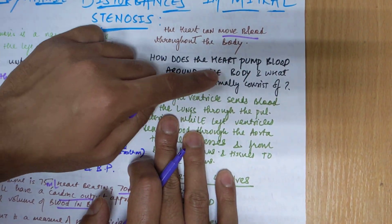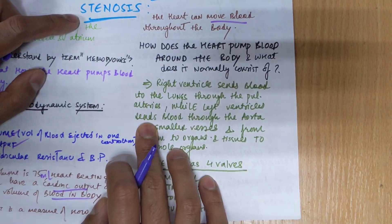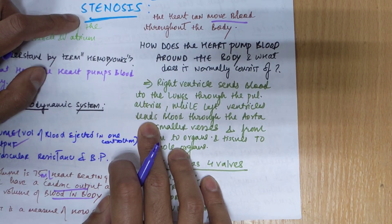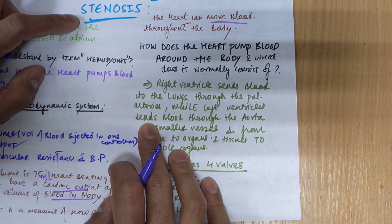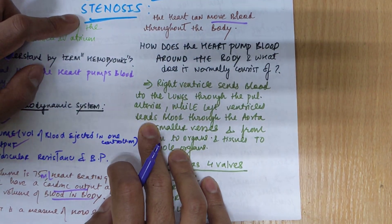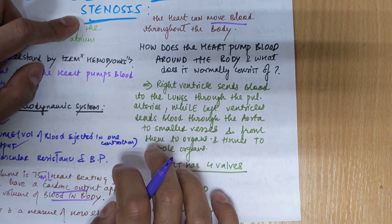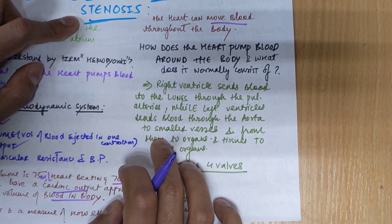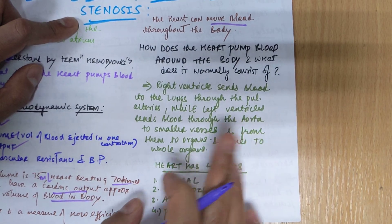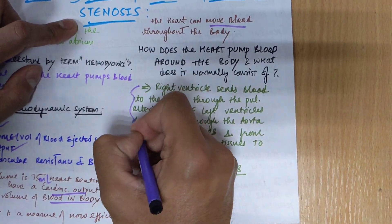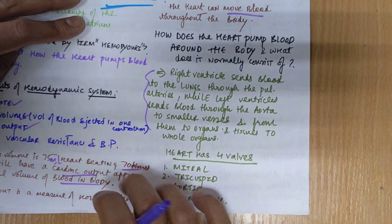How does the heart pump blood around the body? The right ventricle sends blood to the lungs through the pulmonary arteries, while the left ventricle sends blood through the aorta to smaller vessels and from them to the organs and tissues. This is the main mechanism of blood circulation in the heart.